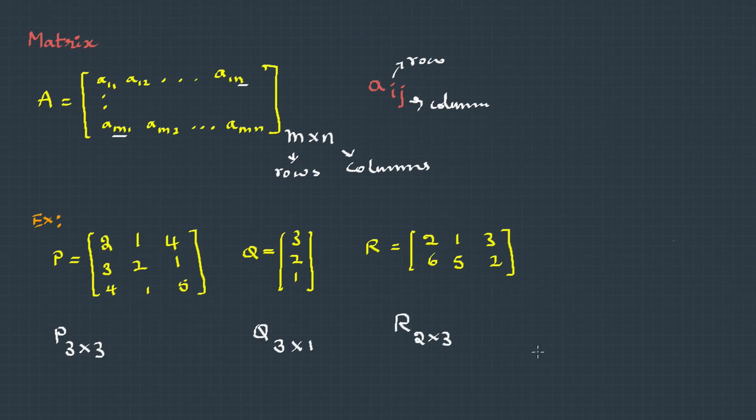Suppose I want to find an element, maybe p21. P21 means the element in the second row, first column. Therefore, this is 3. Maybe here I want to find q31. That's the third row, first element, which is 1.